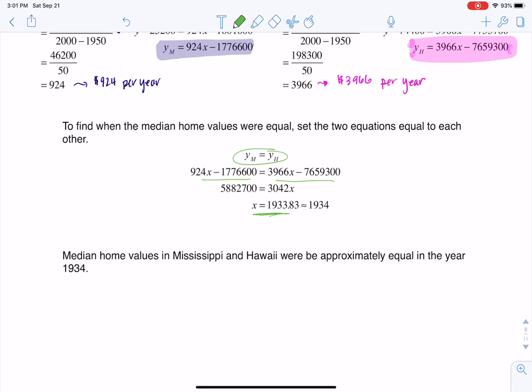So home values in Mississippi and Hawaii were approximately equal way back in 1934. I hope that helps. And I will see you soon. Thanks so much. Bye.